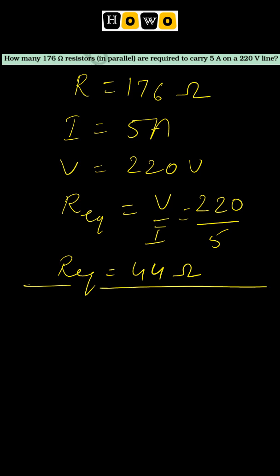So this is the equivalent value of resistance or the total resistance in the circuit. Now let us use this value and find out the number of resistors that can be connected. R equivalent equals resistance of each resistor upon number of resistors.